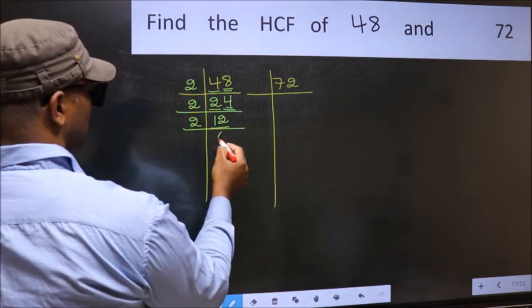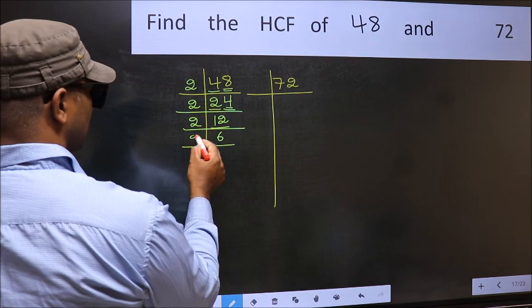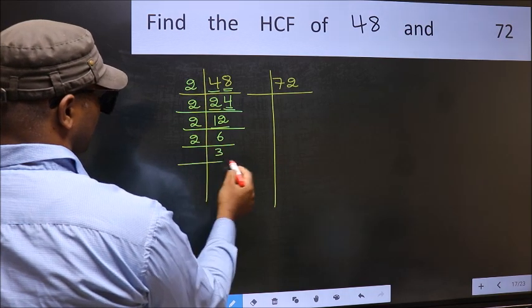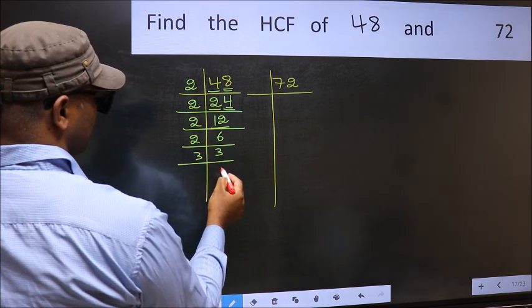Now 12 is 2 times 6 is 12. 6 is 2 times 3 is 6. Now 3 is the prime number, so 3 times 1 is 3.